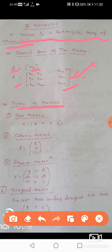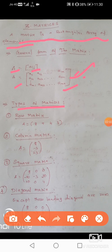Second: Column matrix. The column matrix is nothing but a matrix that contains only one column — elements are arranged vertically.